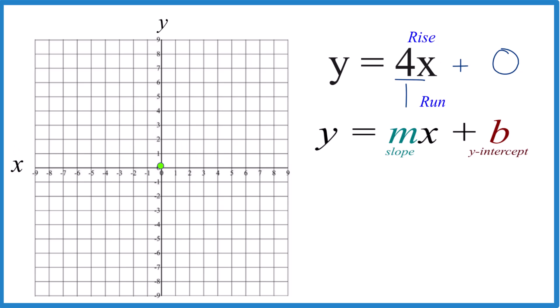So what we'll do is we'll go to that y-intercept here, we'll rise 1, 2, 3, 4 and we'll run 1. That's our second point.